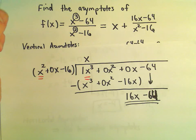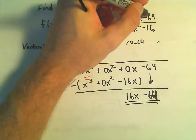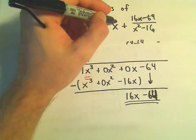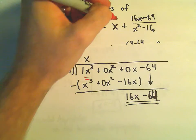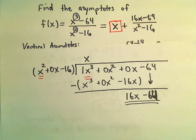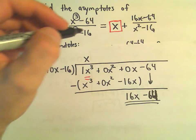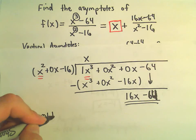And at this point, we now have the equation of our asymptote. Again, we basically just disregard the remainder. Whatever is out front, this is going to be our asymptote. So in this case, we're simply going to have an oblique asymptote.